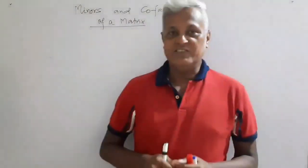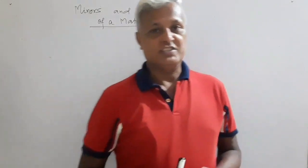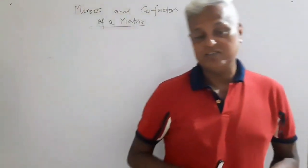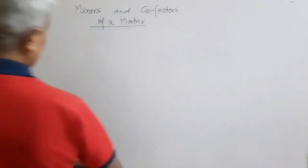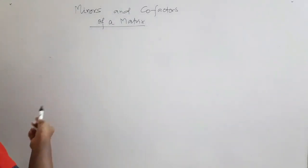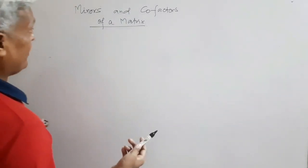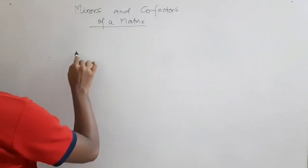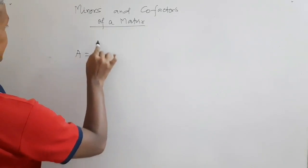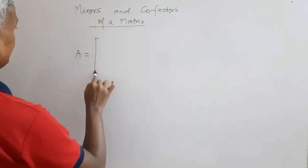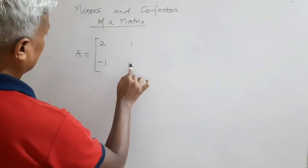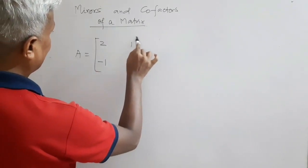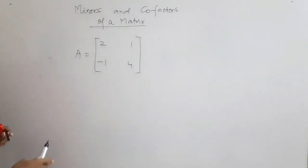Good evening, friends. In this video we are going to discuss minors and cofactors of a matrix. Suppose I have a matrix A represented by elements 2, 1, minus 1, 4. I take only a 2 by 2 matrix because this makes the explanation simple.